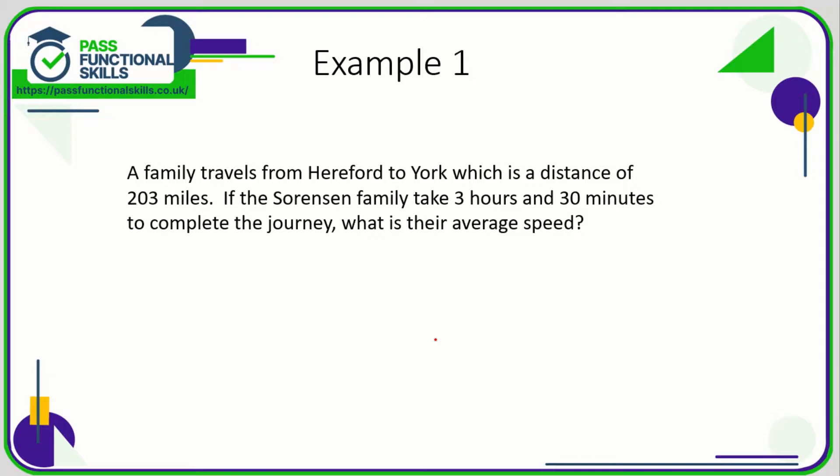Let's take a look at some examples of speed, distance, and time questions. Here we're working out speed, so we know speed is the distance divided by time. The distance is 203 miles and the time is 3 hours and 30 minutes. Now 30 minutes is half an hour, which as a decimal is 0.5, so 3 hours and 30 minutes is going to be 3.5 hours.